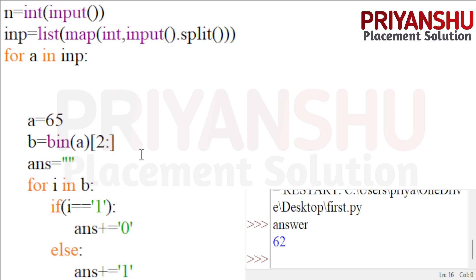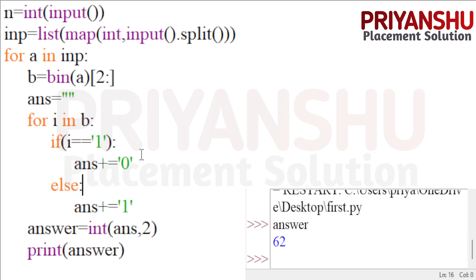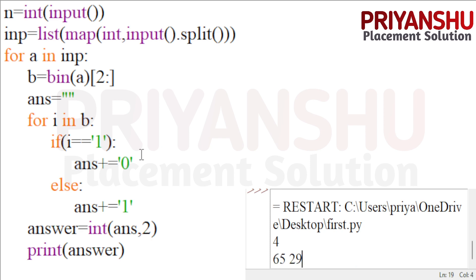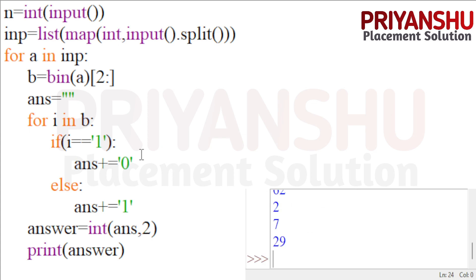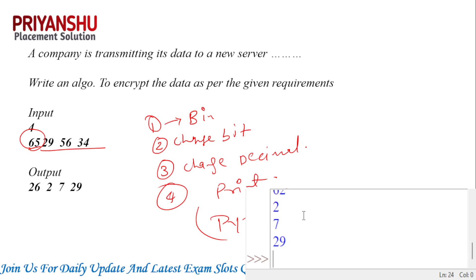This code has already been submitted in today's slot exam. Let me run the code and check the output. I'll give inputs: array length 4, elements 65, 29, 56, 34. We got 62 — correct! And the full output is 62, 2, 7, 29. We got the correct output.